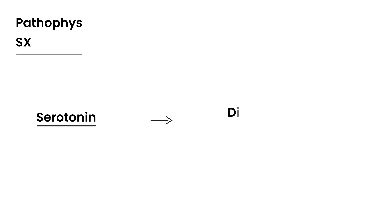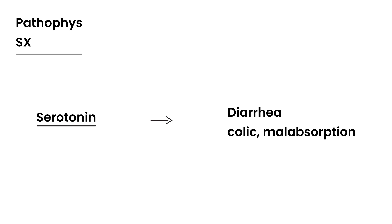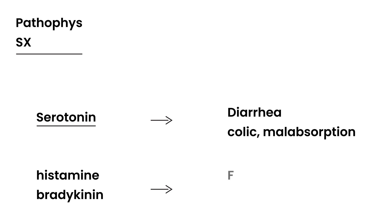What are some of the pathophysiology and symptomatology involved? Serotonin is the biggest player, and when it's secreted by the tumor in large quantities it causes symptoms such as diarrhea, colic, and malabsorption. Another very important symptom occurs because of the release of histamine and bradykinin from the tumor, and those symptoms include facial flushing — specifically flushing of the head and neck.